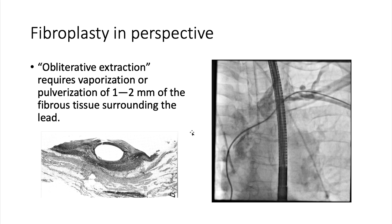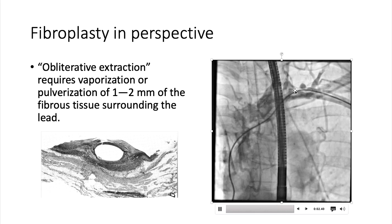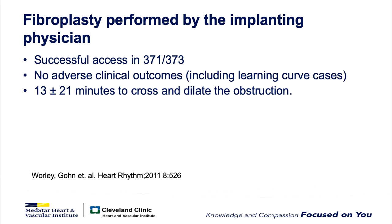Let's put fibroplasty in perspective by comparing it to obliterative extraction, where you vaporize or mechanically pulverize the tissue surrounding a lead. When you do a venogram after such a procedure, it often looks like this. Whereas with fibroplasty, all we're doing is dilating the fibrous tissue.